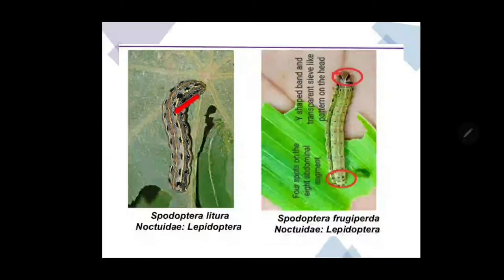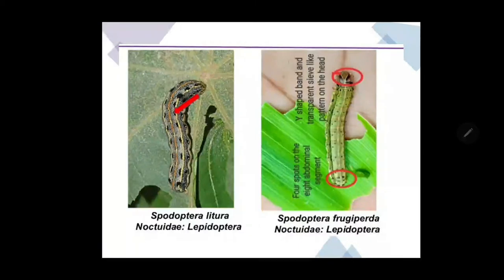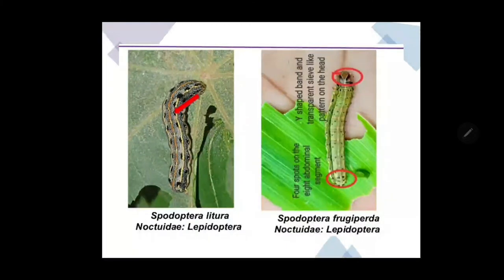This pest many times resembles Spodoptera litura, but differences can be observed. Spodoptera frugiperda has inverted Y-shaped markings on the head, whereas there is no such marking on Spodoptera litura. Also, Spodoptera frugiperda has 4 conspicuous black color spots on each segment, whereas Spodoptera litura has wavy lines along with black colored elongated spots on its back.